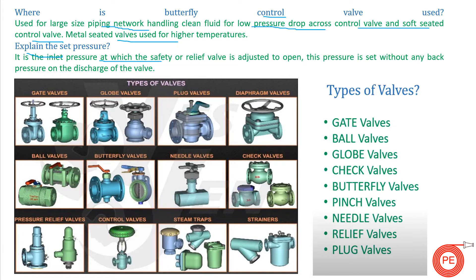The next question is: explain set pressure. Set pressure is the inlet pressure at which a safety or relief valve is adjusted to open. It is the pressure at which the valve will open when there is a rise in the network pressure. This pressure is set without any back pressure on the discharge of the valve.